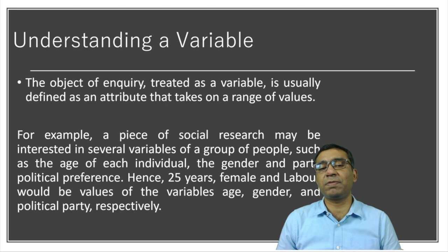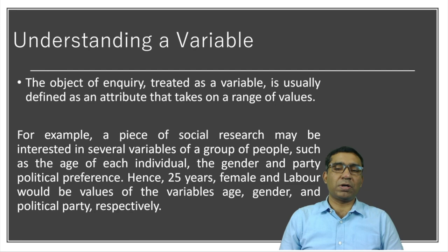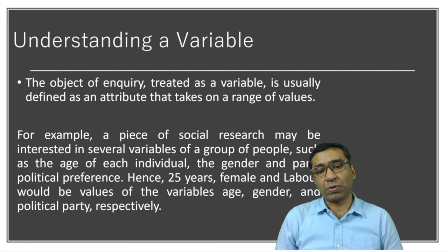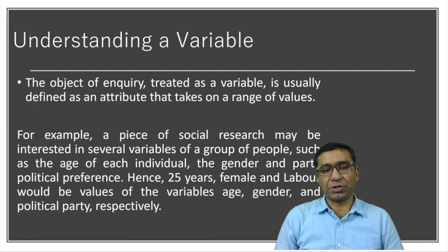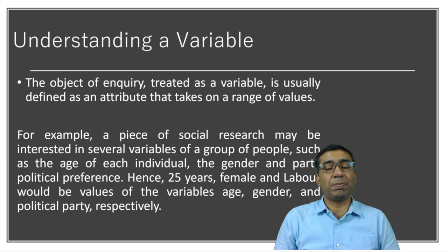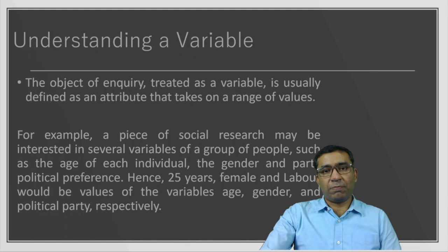A piece of social research may be interested in several variables of a group of people — it is not only one variable. Maybe there is more than one variable we are trying to estimate in our research. For example, individual age, individual gender characteristics, political views, or any other characteristics we want to measure in social sciences-based research. In one research we can use more than one variable for conceptualizing any framework.